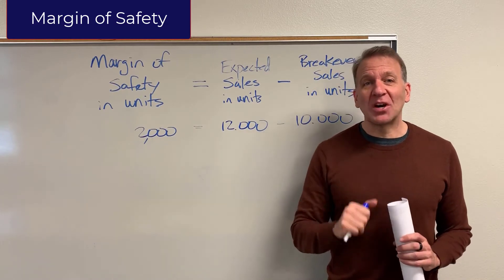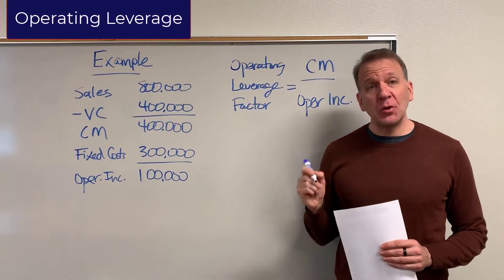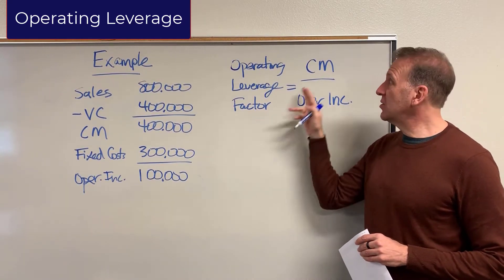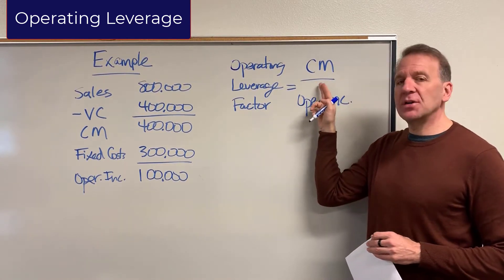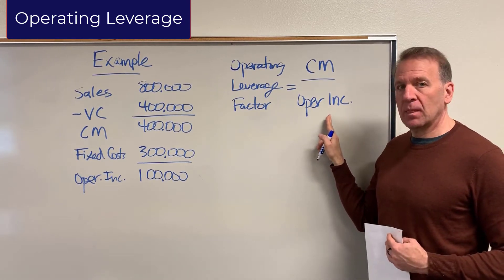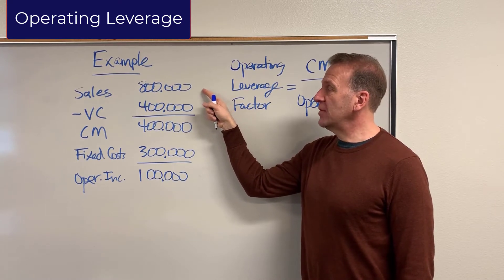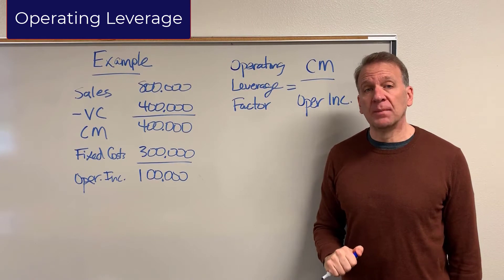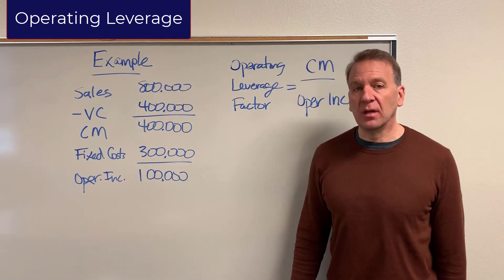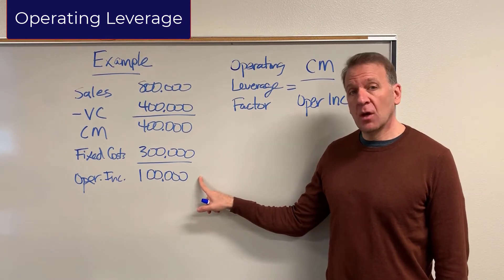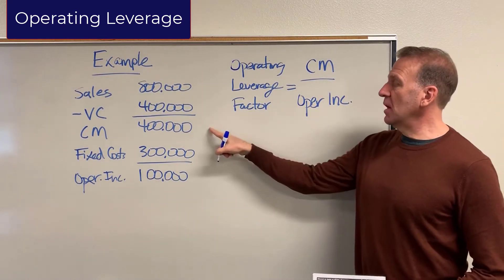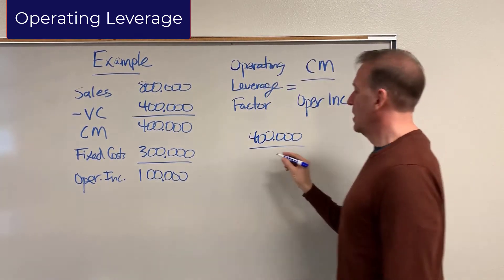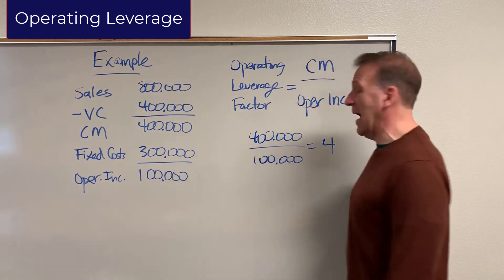Now let me erase this board and we'll start talking about operating leverage. I now have the equation for operating leverage factor on the board. The equation is contribution margin divided by operating income. In this example, sales are $800,000, variable costs are $400,000, giving a contribution margin of $400,000. Fixed costs are $300,000, so operating income is $100,000. Contribution margin of $400,000 divided by operating income of $100,000 gives us an operating leverage factor of four.